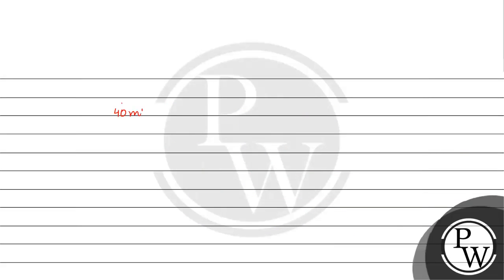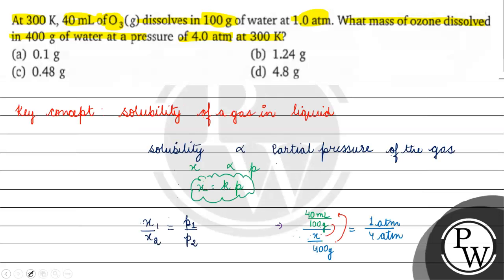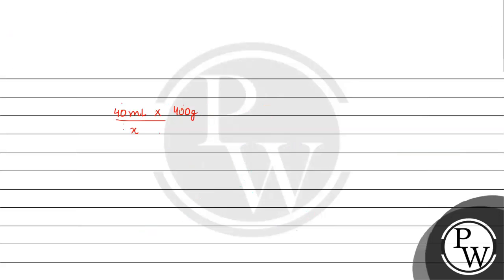Using x1/x2 = p1/p2, we set up: (40 ml × 400 gram) divided by (x × 100 gram) equals 1/4. Simplifying, we get 160 ml / x = 1/4. Solving, x = 640 ml. This is the volume of ozone dissolved in 400 gram of water at 4 atm.